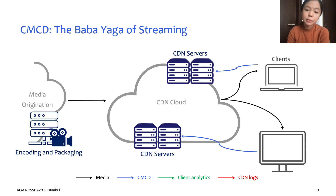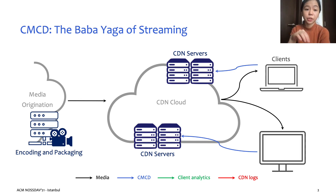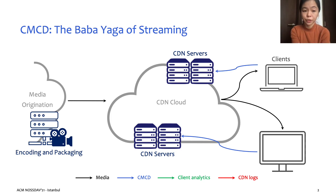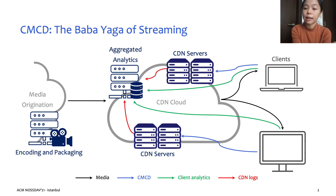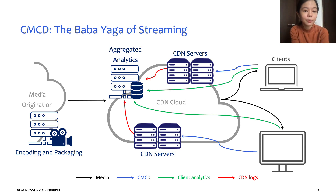To put it simply, CMCD allows a media client to send information along with its HTTP request to the CDN server in a standardized format that is server agnostic, as seen in the blue arrows in the slide. This information could be useful for several things, such as log association and analysis, quality of service or quality of experience monitoring, and delivery enhancements. In this paper, we demonstrate how CMCD can be useful in enhancing the performance of adaptive streaming applications.